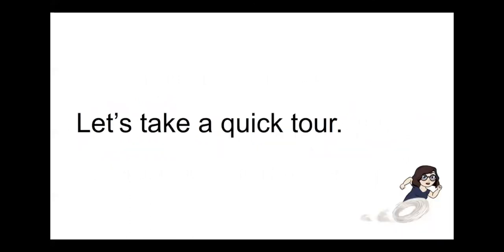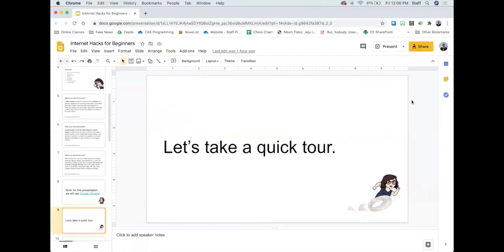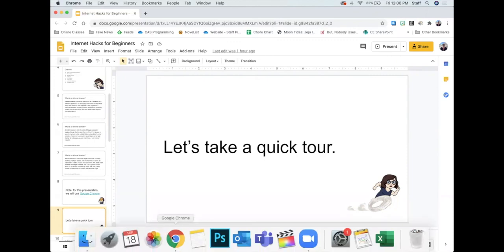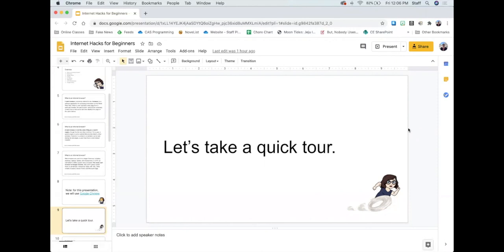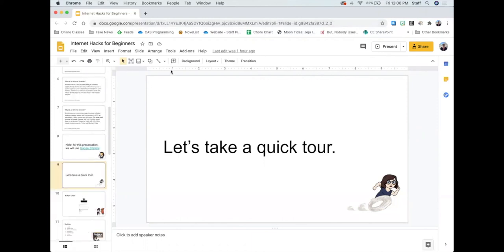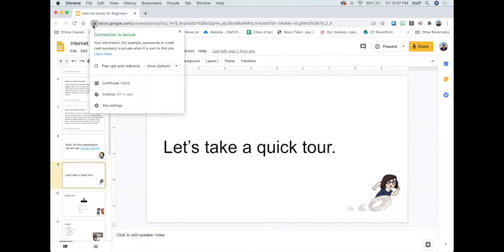Before we start, we're going to take a quick tour of Google Chrome. I'm already using a slide deck on Chrome. When you open a browser on a Mac you can go down to the bottom of the screen, find your browser, and open a new window. At the top of the screen there's a bar you can type into — this is called the address bar. This is where you type in web addresses to go to different sites. One thing to note in Chrome is the padlock icon — when I click it, it tells me my connection is secure.